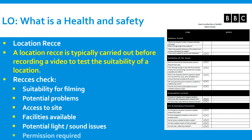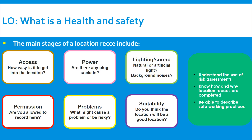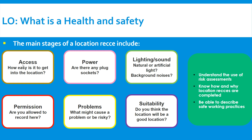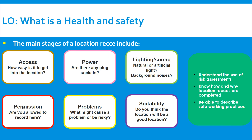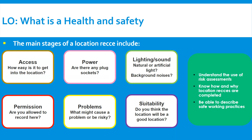They also check for any potential sound or light issues — for example, whether the sound will echo or whether there is enough light on set. Specific things they look at include: access — is the location easy to get to; power — are there plug sockets for camera equipment; lighting and sound — is there natural light, and is there background noise; permission — are you allowed to film there; problems — what might be risky or cause issues; and suitability — is the location appropriate for what's being filmed.